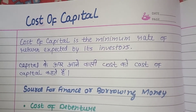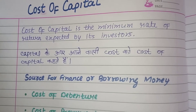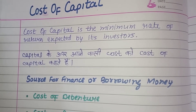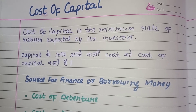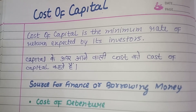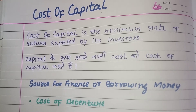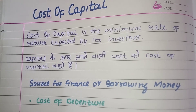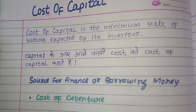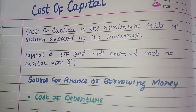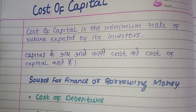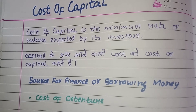So cost of capital hota kya hai? You should know the word capital. Capital kya hota hai? Jab aap business start karte hai, tau us time jo paisa lagta hai, that is known as capital. So your chapter is cost of capital — means capital ki cost. Capital ke upar aane wala cost ko hum cost of capital kehte hai.